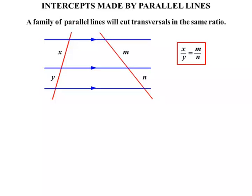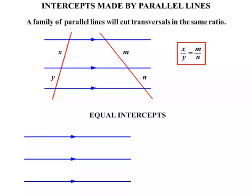Alright, so that's if we have a family of parallel lines. Now a special case is when there are equal intercepts. So again, there's our family of parallel lines, and if the first transversal is cut equally, so you've got equal intercepts there, then any other transversal will also be cut with equal intercepts.